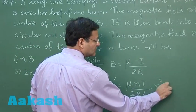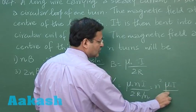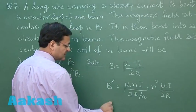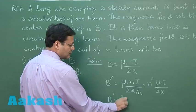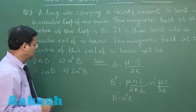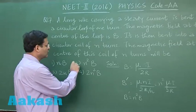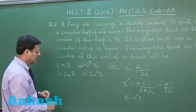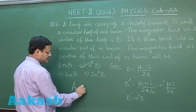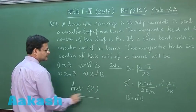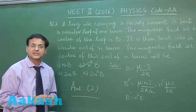It is N square mu naught I by 2R. What is the magnetic field? This is N square B, N square times the original magnetic field. I find option 2 will be the appropriate option for this. I will be marking answer 2 for this. That is the answer to question 27.